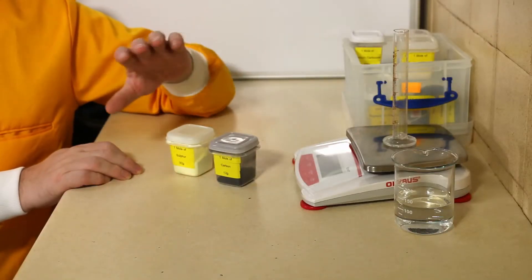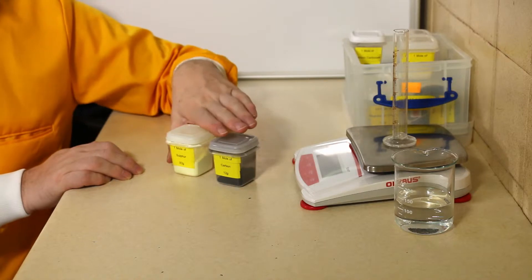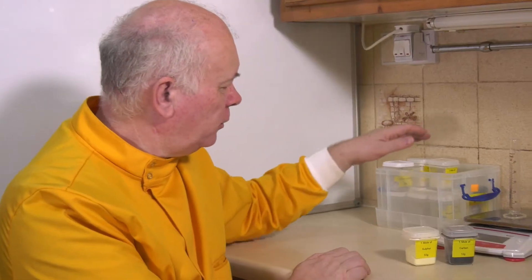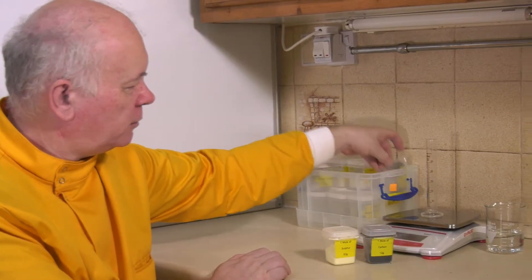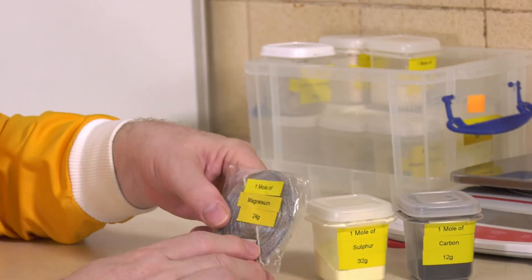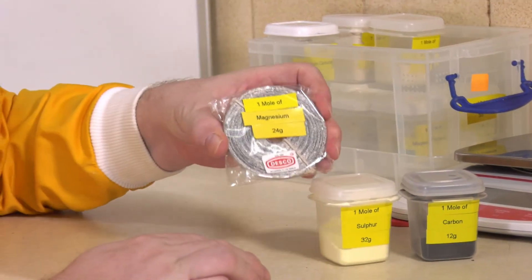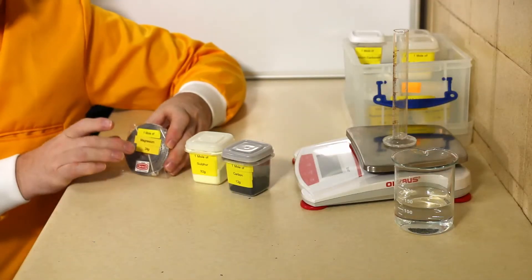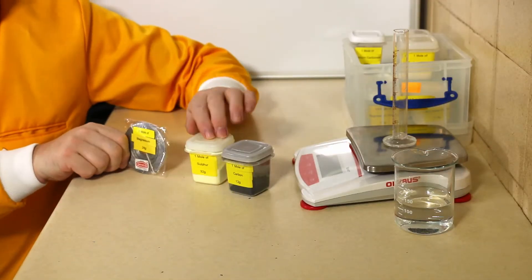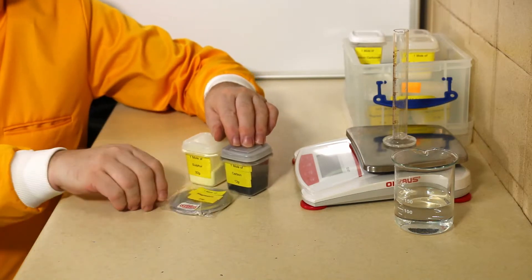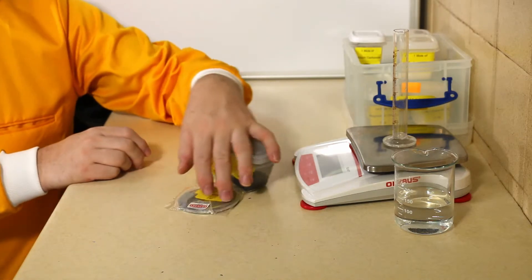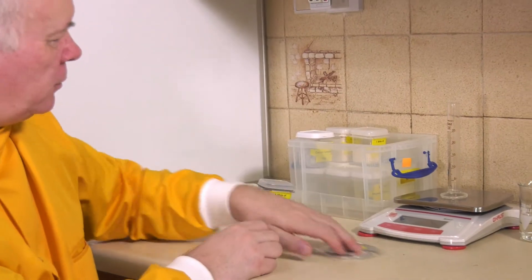If I have a look at another substance, I've got here one mole of magnesium - again, completely different size, but 24 grams. This one mole of magnesium has the same number of atoms in here as in here, as in here.